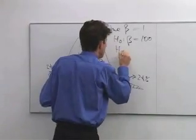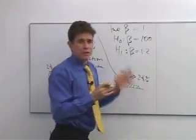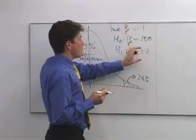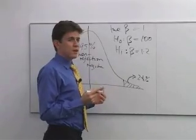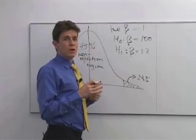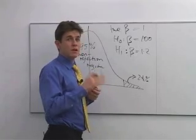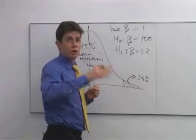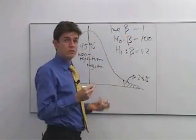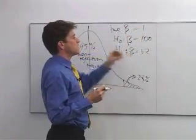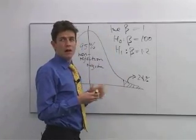If, on the other hand, we were testing a null hypothesis that the true value of beta was 1.2, then the null hypothesis value isn't very wrong compared with the true value. So in that situation we're much more likely to commit a Type 2 error — that is, we're much more likely to not reject the null hypothesis when it was in fact wrong and should have been rejected. Even though the null hypothesis is wrong, it's going to be much harder to distinguish between the true value and the value we're hypothesising under the null.